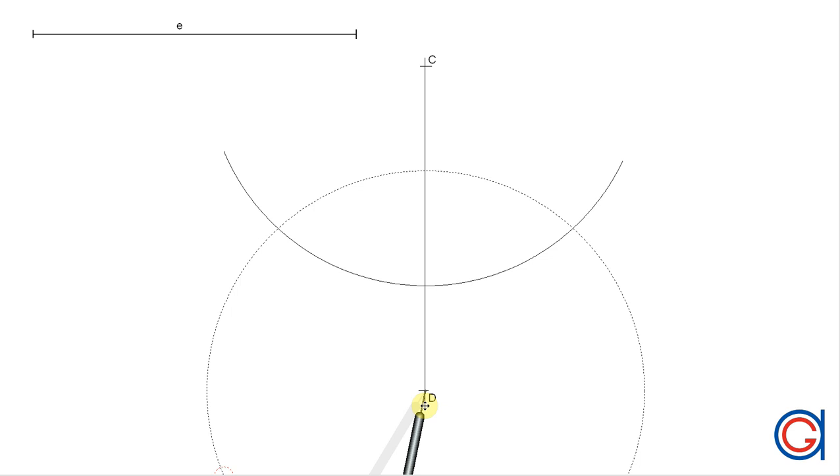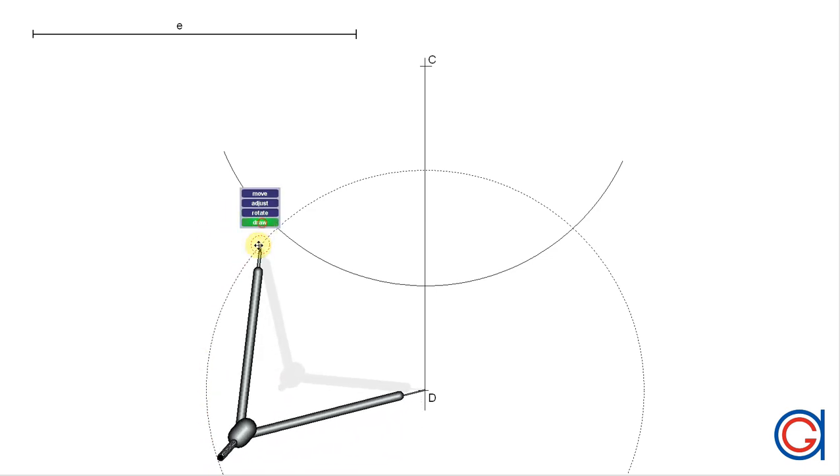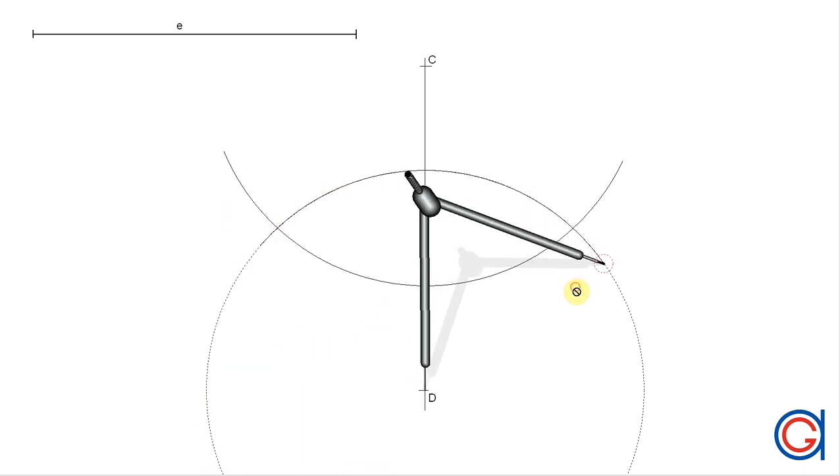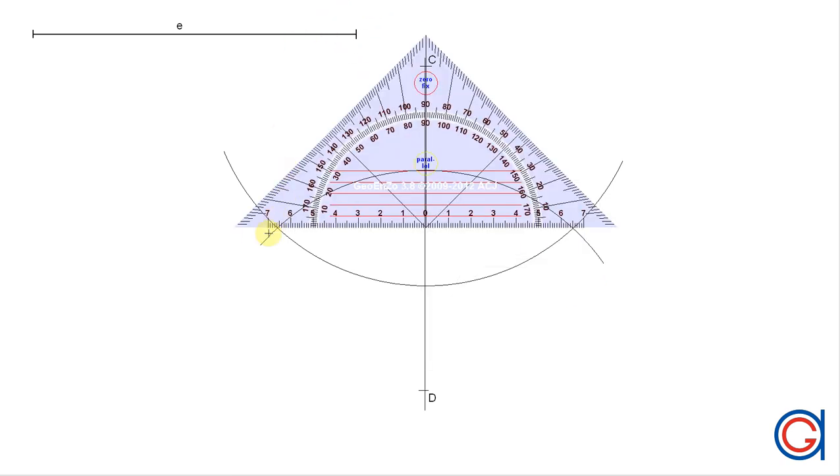And now with the same radius, setting our compass on the point D, we scribe another arc until it cuts our previously drawn arc at two places, which we will join with a horizontal line.